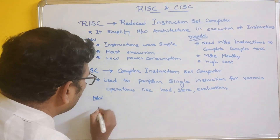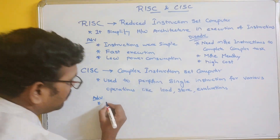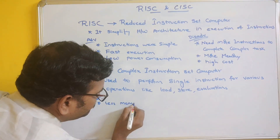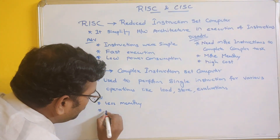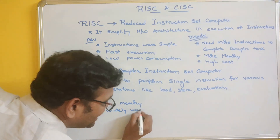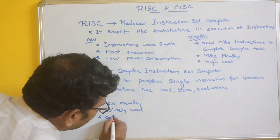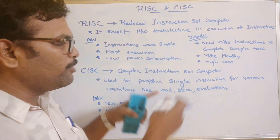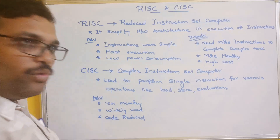One of the advantages of CISC is it requires less memory. It is a widely used architecture because it is less expensive and the code is automatically reduced, since multiple operations can be performed using a single instruction. So code has been reduced — these are the advantages of CISC architecture.